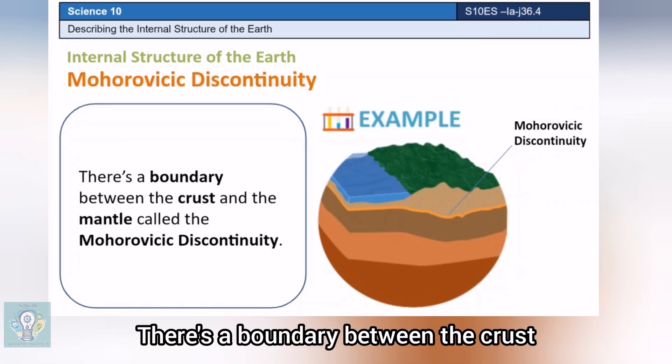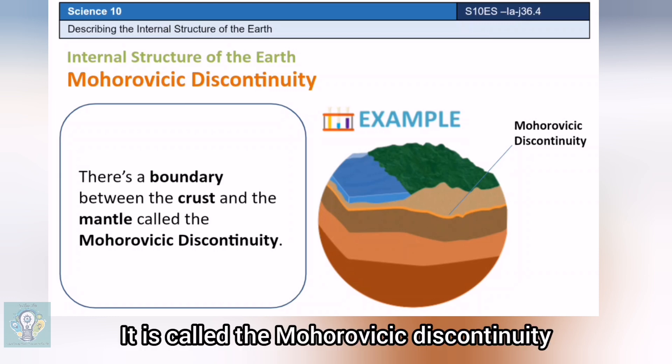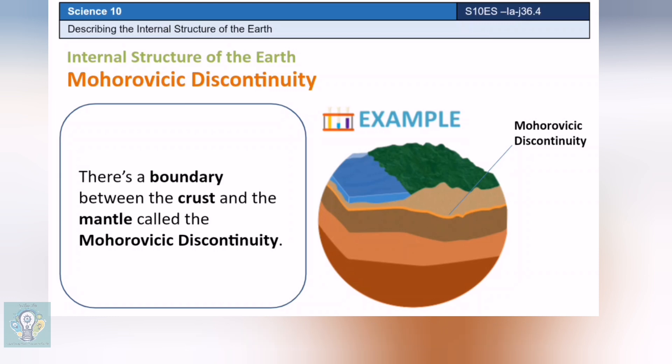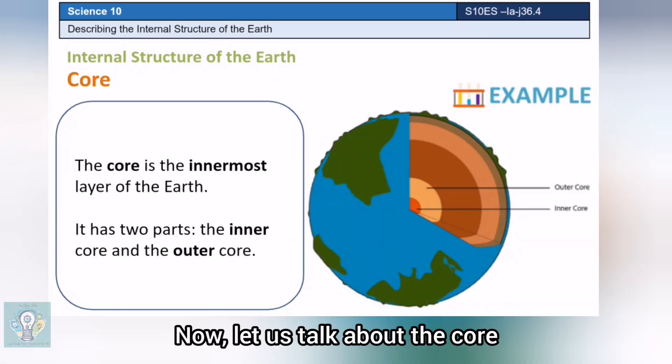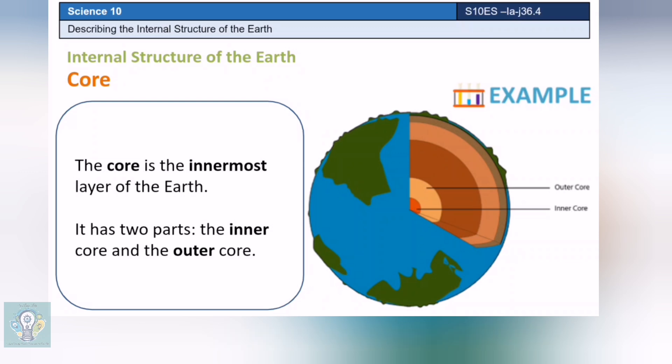There's a boundary between the crust and the mantle called the Mohorovičić discontinuity. Now, let us talk about the core, which is the innermost layer of the Earth. It is divided into two parts: the outer core and the inner core.